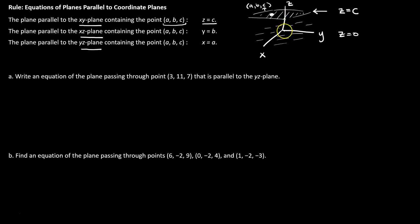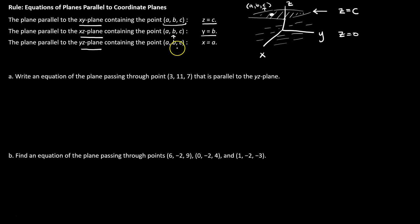We can repeat this argument for planes parallel to the other coordinate planes. For the xz plane, a parallel plane containing point (a, b, c) has a fixed y value, so its equation is y equals b. For a plane parallel to the yz plane containing point (a, b, c), the equation is x equals a, because any plane parallel to the yz plane has a fixed x value. This is our shortcut: know the parallel coordinate plane and a point in it, and you can quickly write the equation.